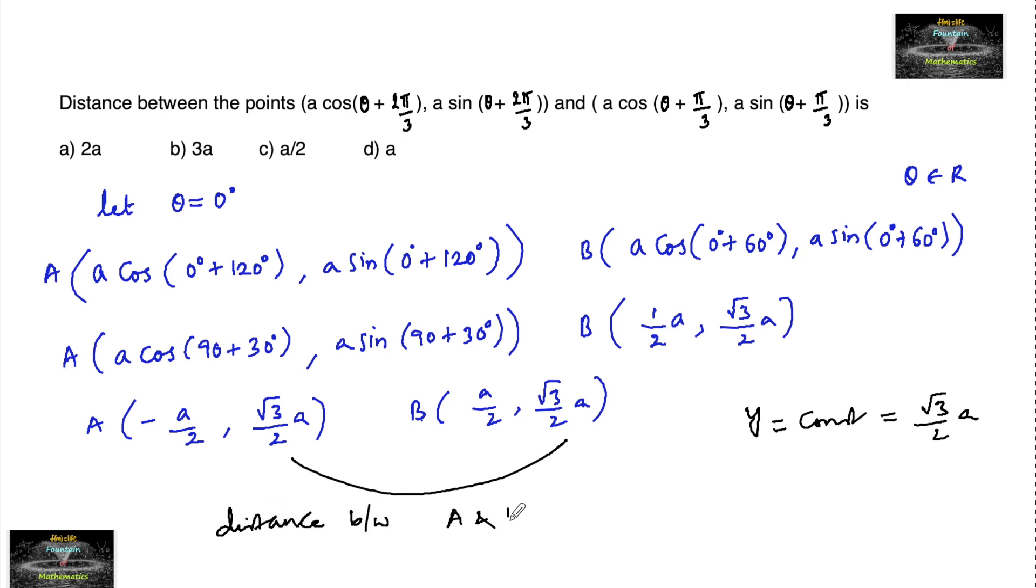Distance between A and B is |x2 - x1|, which equals |a/2 - (-a/2)|, which gives a/2 + a/2.